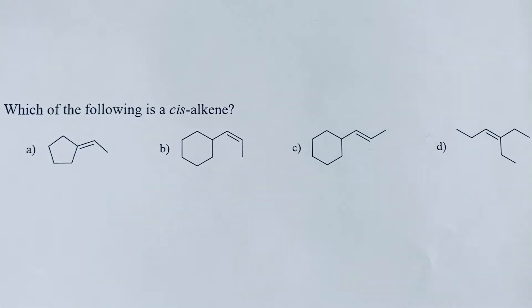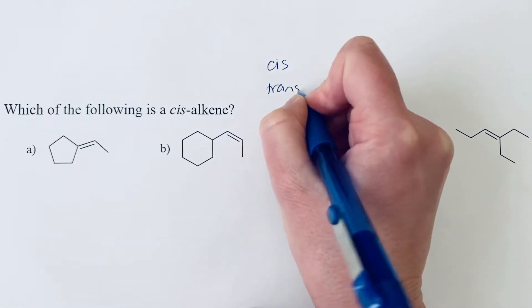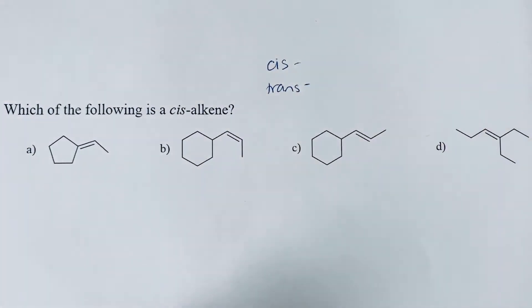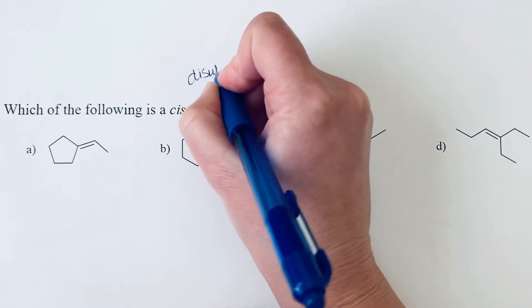Which of the following is a cis-alkene? Cis and trans are terms that we use for disubstituted cycloalkanes or disubstituted alkenes. So we can use these for disubstituted alkenes.